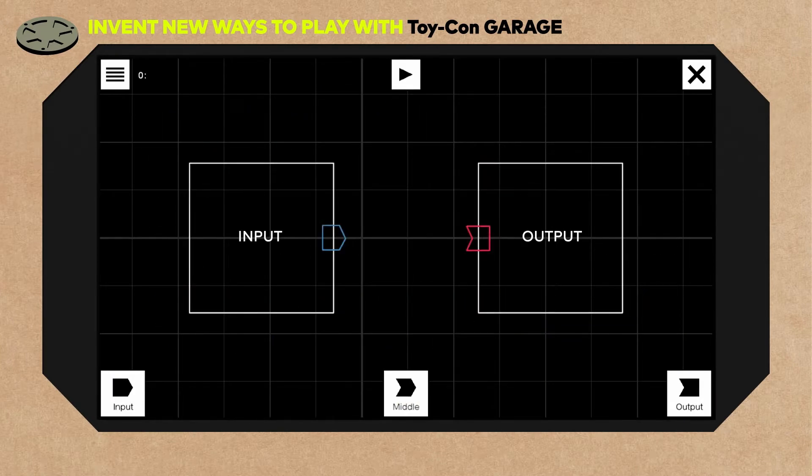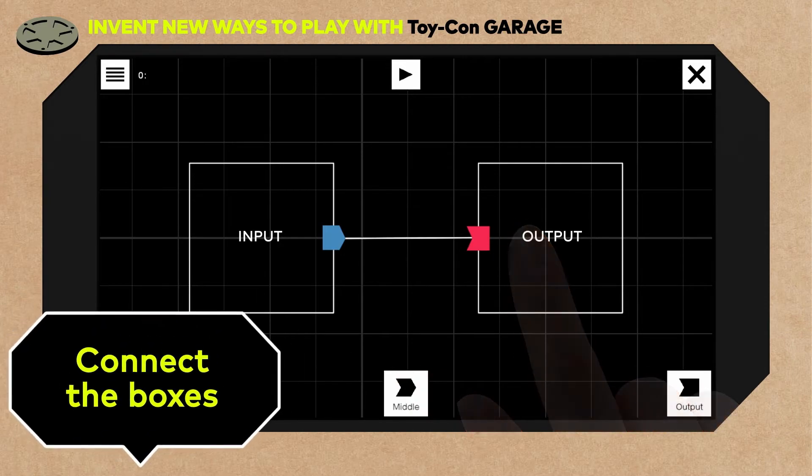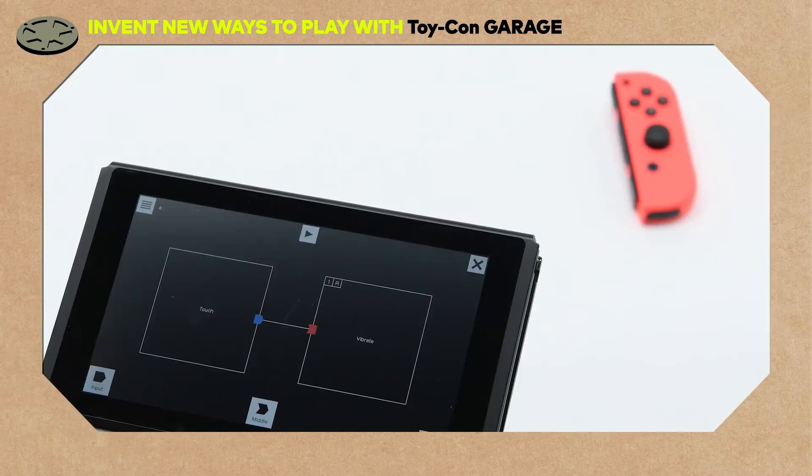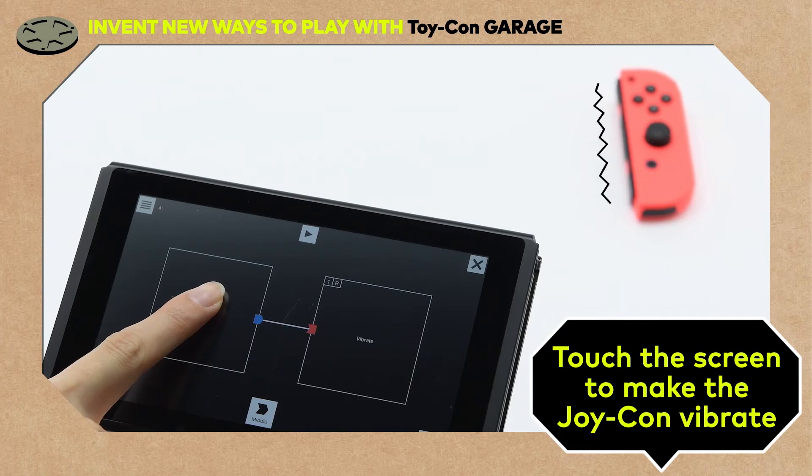Getting started is easy. Connect these boxes together, and just like that, we've created a system where touching the screen makes the Joy-Con vibrate.